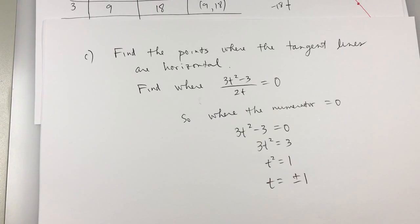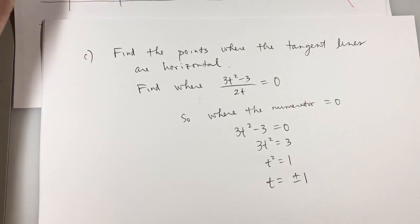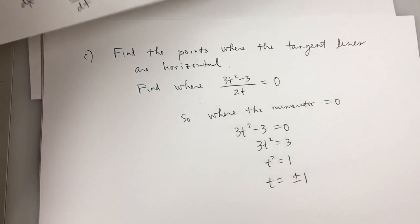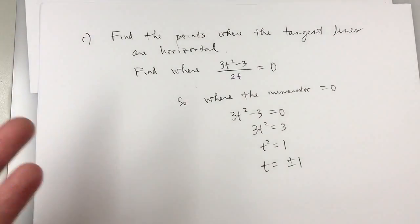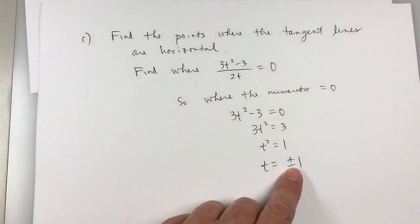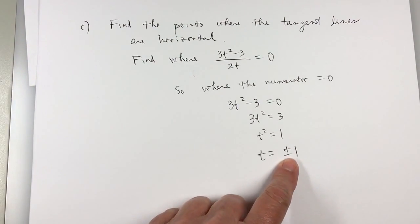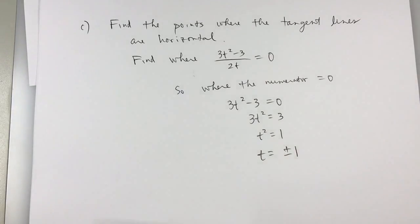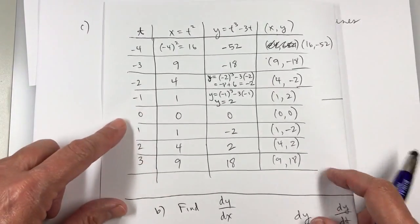Now looking, I got lucky here because these numbers are in my chart. If they were not in the chart that I generated, then I'd have to go ahead and find the x and y values. Plug in 1 for t, plug in negative 1 to get the x and y values. But they're right here.